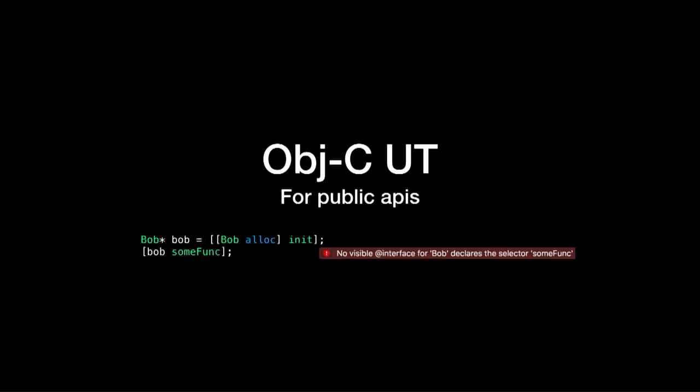A second tip is to write Objective-C unit tests to test the Swift functions that you want to make available to your Objective-C developers in your library. In that way, you can directly detect if a function is not bridgeable to Objective-C, or if there are crashes or bugs in there.